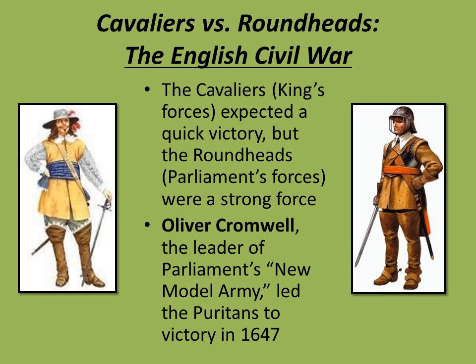The Cavaliers expected to rout Parliament's forces pretty quickly — they saw themselves as better fighters, better trained, better funded. But Parliament's forces ended up being fairly formidable. They were known as the Roundheads, or the New Model Army.